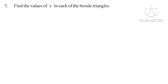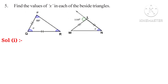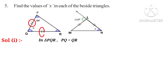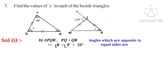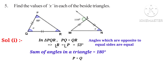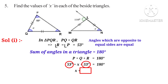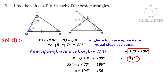Fifth problem: find the values of X in each of the adjacent triangles. Solution 1: in triangle PQR, the sides PQ and QR are both of equal length as shown by the tick marks, which implies angle R is equal to angle P, equal to 53 degrees, because angles opposite to equal sides are equal. We know the sum of angles in a triangle is 180 degrees, so P plus Q plus R equals 180 degrees. That is 53 plus X plus 53 equals 180 degrees, so X plus 106 degrees equals 180 degrees, giving X equal to 74 degrees.